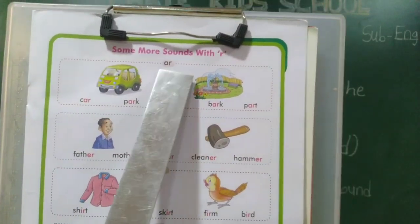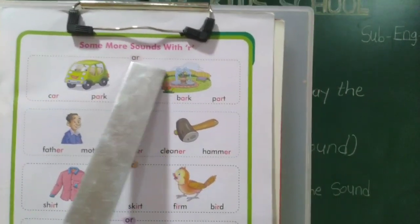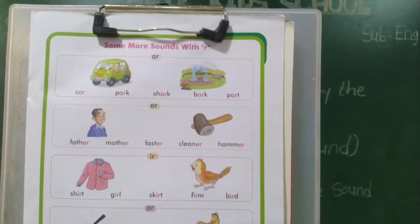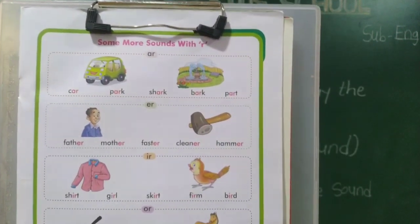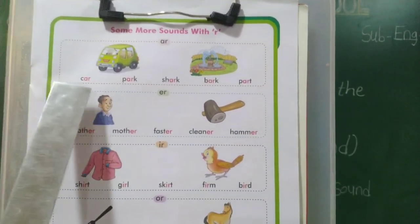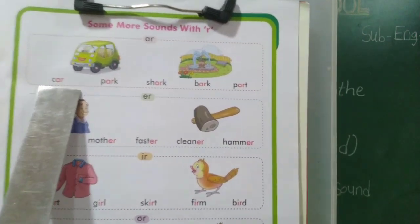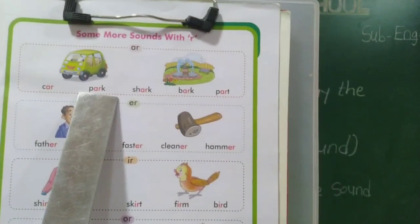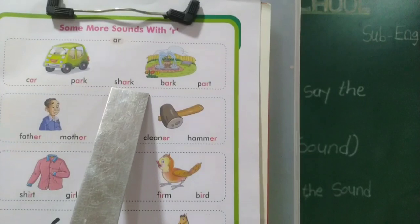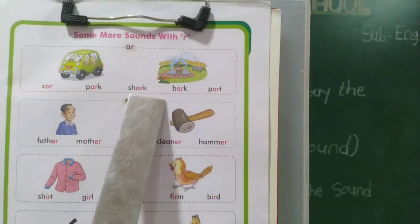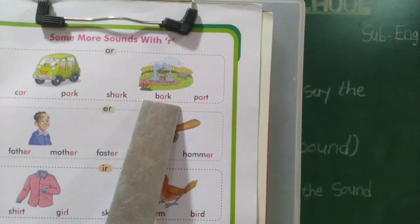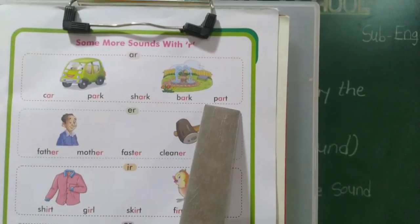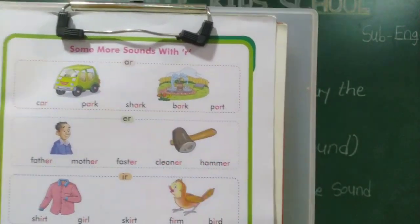First, look at A-R. A's sound: A. R's sound: R. Together we say AR. C-A-R — car. P-A-R-K — park. S-H-A-R-K — shark. B-A-R-K — bark. P-A-R-T — part.